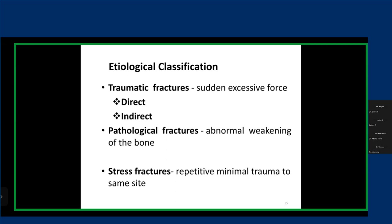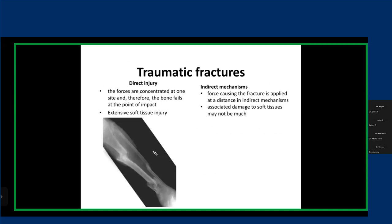It's important to know whether the force is direct or indirect, because that tells us a lot about how extensive the soft tissue injury is. In an indirect mechanism, the force does not result in extensive soft tissue injury, whereas in a direct injury where it's a direct hit, we can expect extensive soft tissue injury. That's important for both the management of the soft tissue and also the management of the fracture.